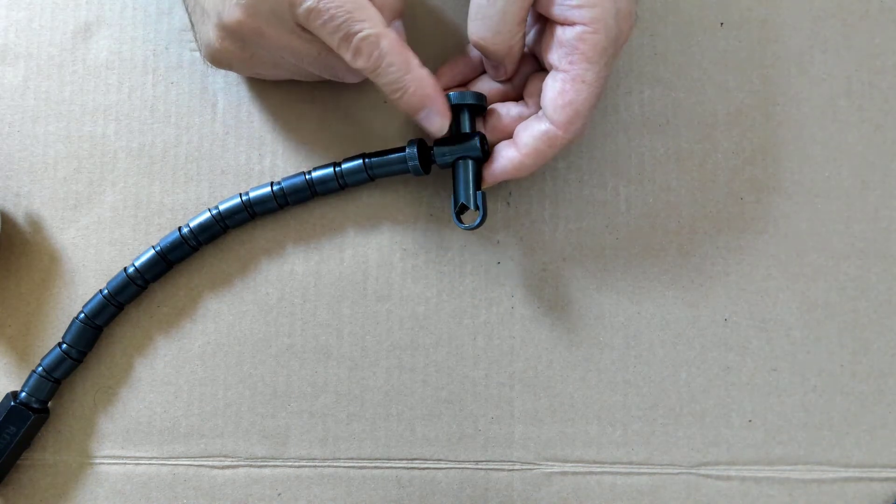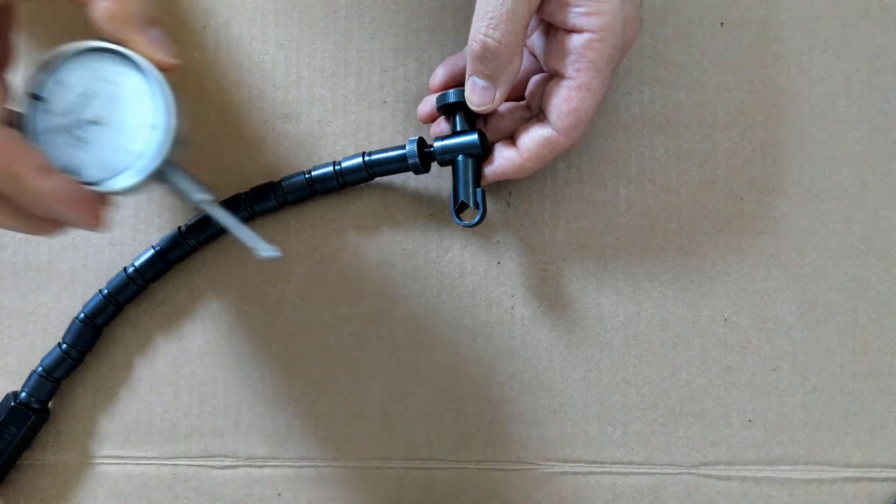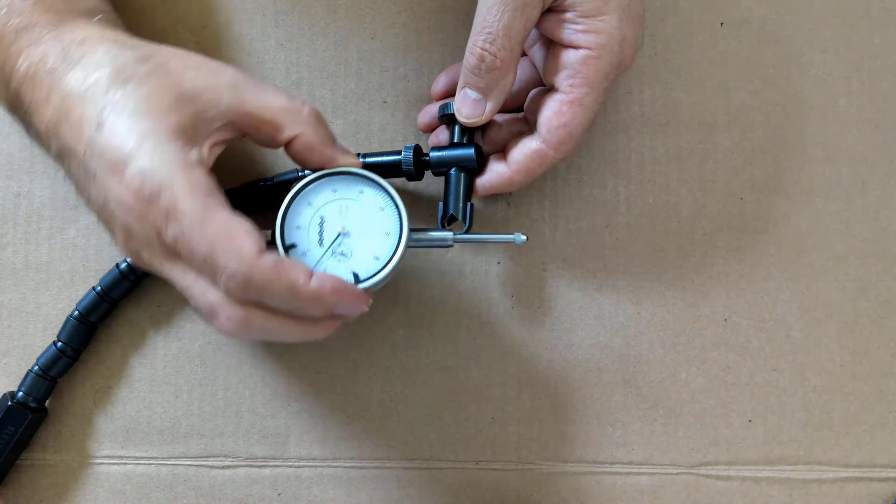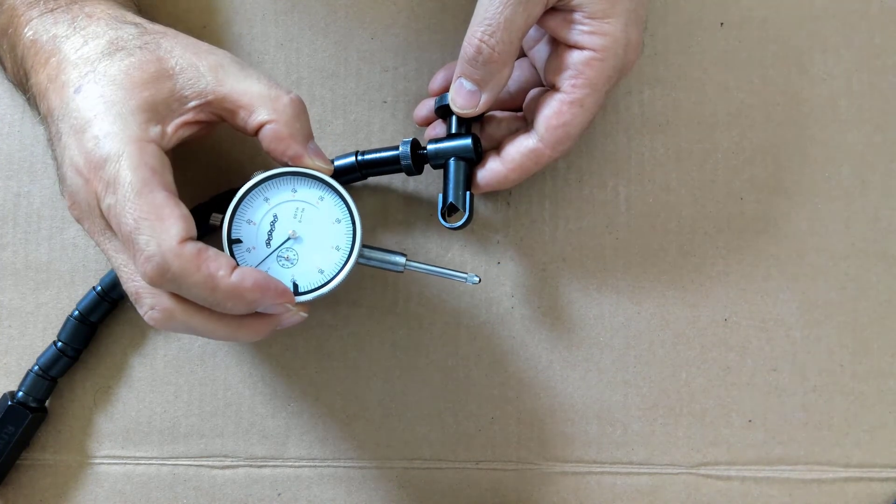As you tighten the thumb screw, it will reduce the diameter of that mount. That is designed for clamping onto a standard dial indicator or a round mount on a dovetail design.